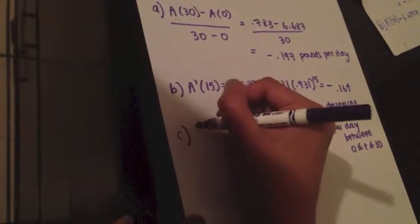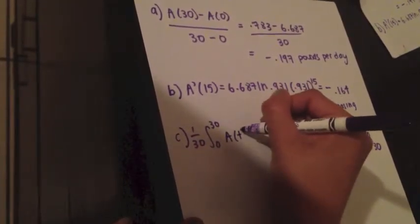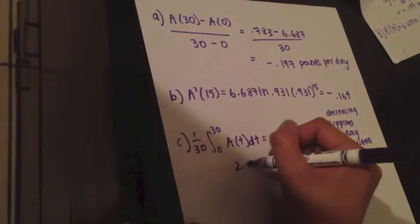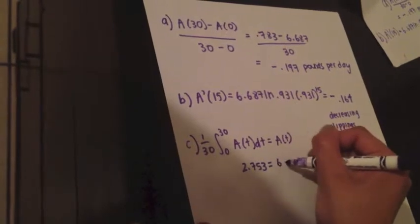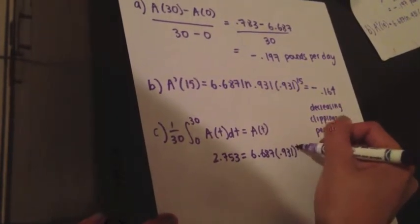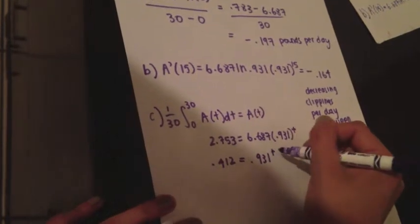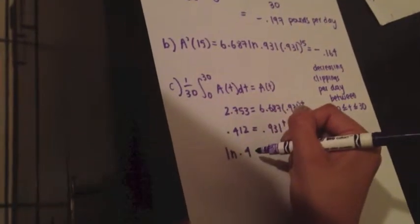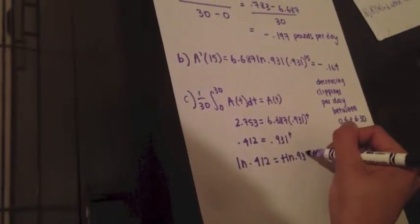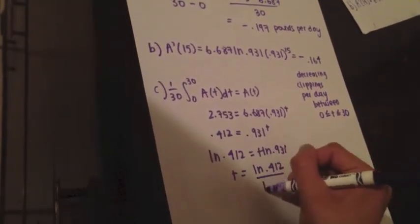To find the time t for which the amount of grass clippings in the bin is equal to the average amount of grass clippings in the bin over the time interval 0 to 30, we first set one thirtieth of the integral of a of t from 0 to 30 equal to a of t. Finding the value of that integral divided by 30 and setting it equal to the equation gives us 0.412 equals 0.931 to the t. Taking the natural log of both sides gives ln of 0.412 equals t times ln of 0.931. Dividing by ln of 0.931 gives t equals 12.4 days.